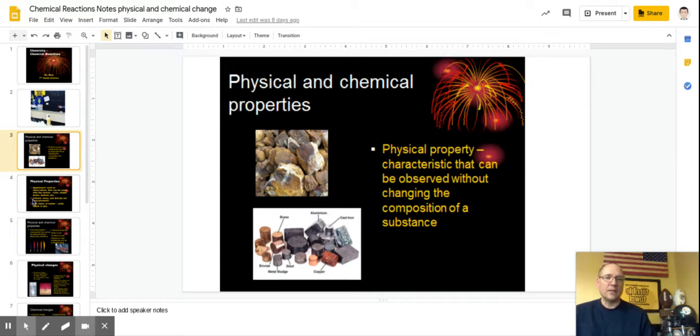Physical properties, start with that, characteristics that can be observed without changing the composition of a substance. So when I look at the rock, I can notice its color, I can notice its shape, I can hold it in my hand and feel its temperature, I can measure its temperature, I can measure its mass and its volume, all those things I can observe without changing what it is. So there are a variety of physical properties and the key with it being a physical property is something that we can observe without changing the substance.